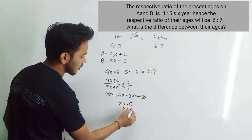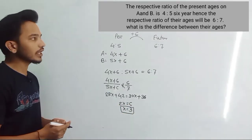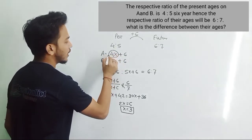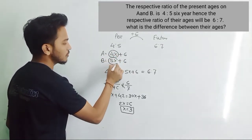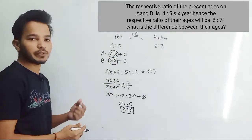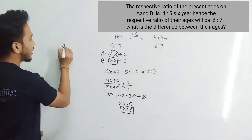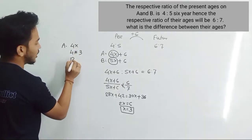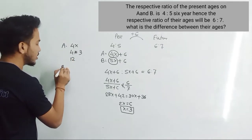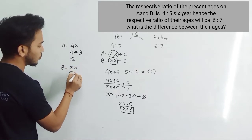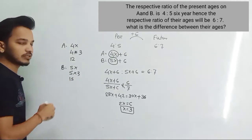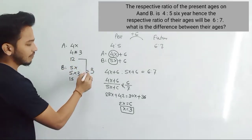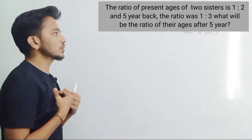Solving: 28x − 30x = 36 − 42, so −2x = −6, meaning x = 3. Present age of A = 4x = 4 × 3 = 12 years. Present age of B = 5x = 5 × 3 = 15 years. Difference between their ages = 15 − 12 = 3. So the answer is 3 years.